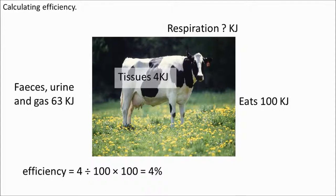So for a cattle farmer, 96% of the energy you supply to that cow in the form of food that you paid money for is wasted. You can start to see why cattle farming might be quite challenging, and why meat costs so much more than rice or wheat or other plants — especially if the animal is free range.